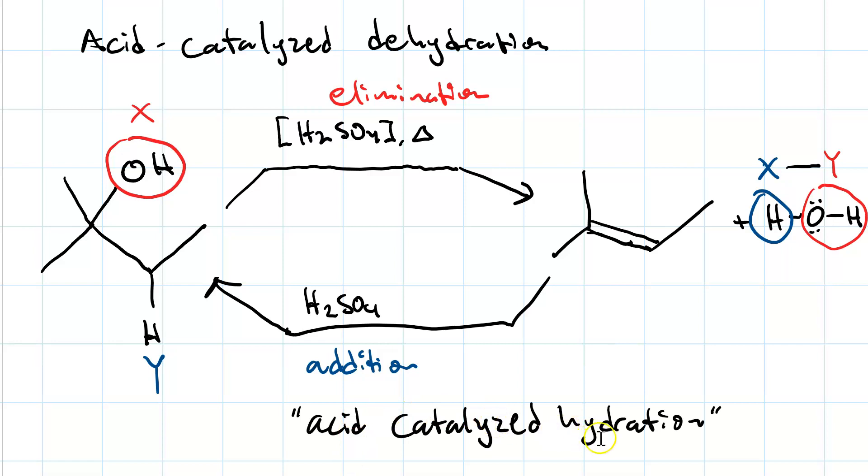Acid catalyzed hydration has specific regiochemistry and stereochemistry. Note how I put the hydroxyl group on the more substituted of the sp2 carbons. That's called Markovnikov regiochemistry. Acid catalyzed hydration is regio-selective in that the major product is always Markovnikov, with the hydroxyl group going in the more substituted position and the hydrogen going in the less. However, it goes through a carbocation intermediate, which is planar. So the stereochemistry is not selective. It can be either syn or anti-addition. We'll talk more about it later.